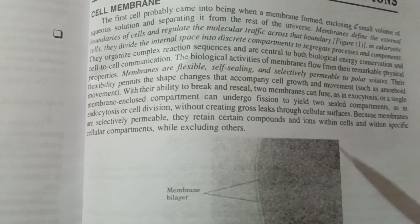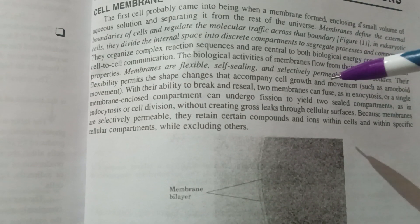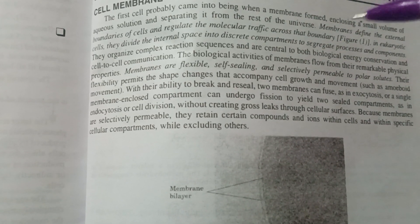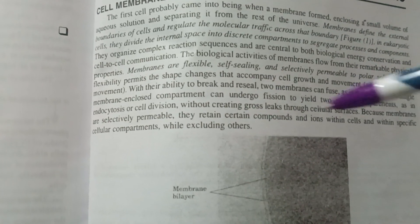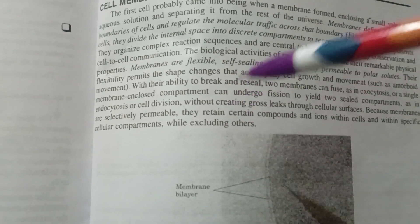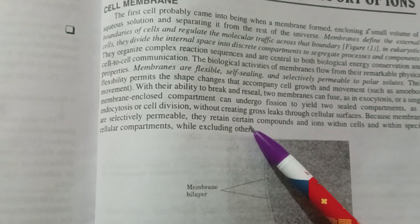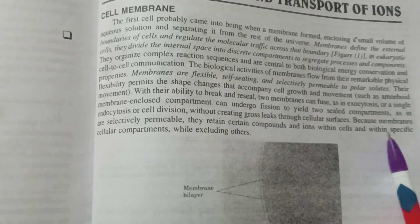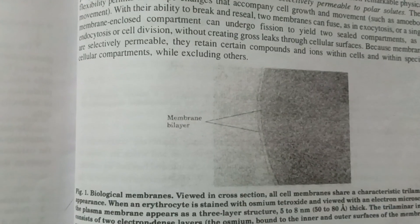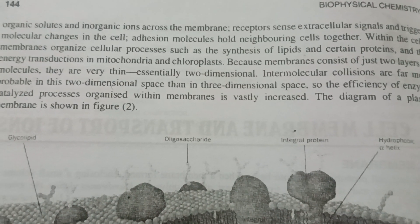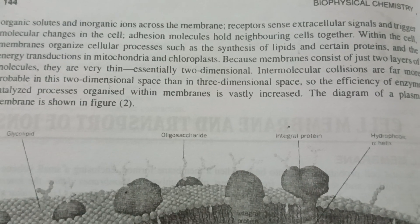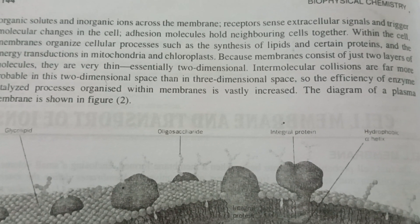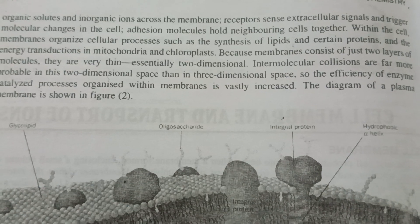Here you can see what the cell membrane is — the rest of the universe is our fluid, which is different. The semi-permeable membrane is selectively permeable. It retains certain compounds and ions within cells in specific cellular compartments. Receptors send extracellular signals and trigger molecular changes in the cell.